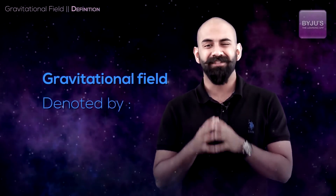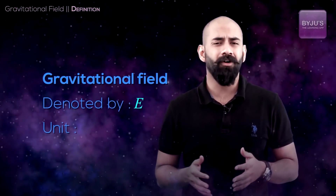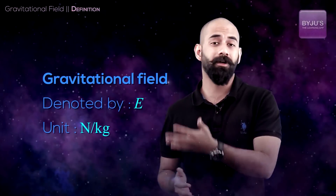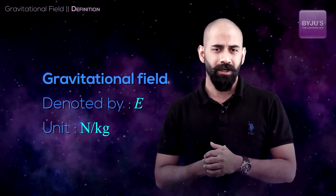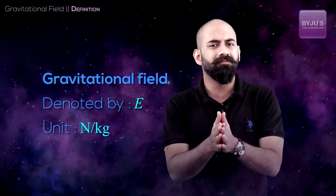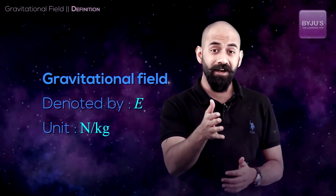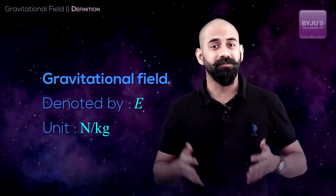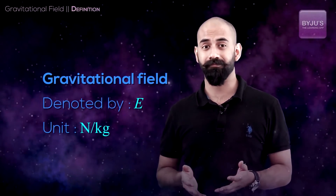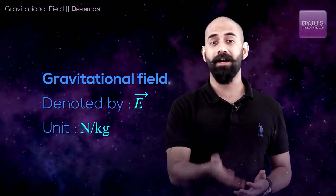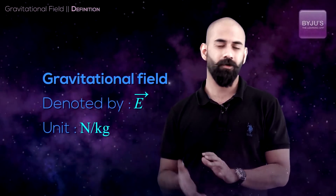Gravitational field is generally denoted by the letter capital E. Its unit is Newton per kg, because it is force per unit mass. Another common question: is gravitational field a vector or scalar quantity? Since it is defined as the force that a unit mass would experience at a point, and force is a vector, gravitational field is a vector quantity.